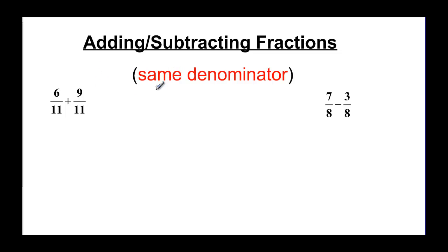The same ones are the nice and easy ones because what we do here is we really want to know how many elevenths do we have. So we just have to add the tops. So 6 plus 9 is going to be 15 and that means that we have 15 elevenths.